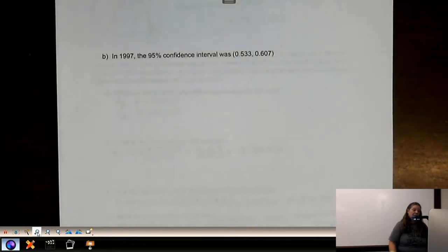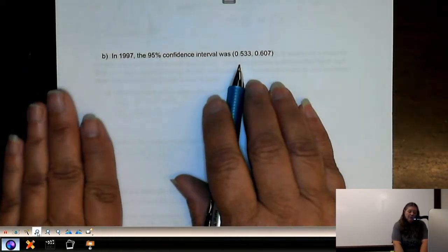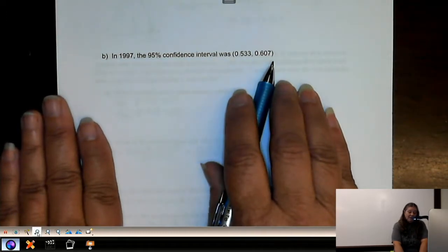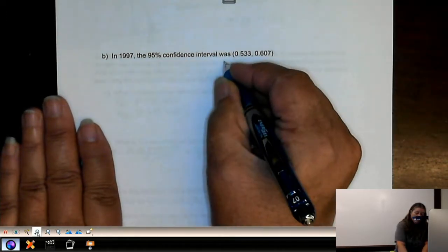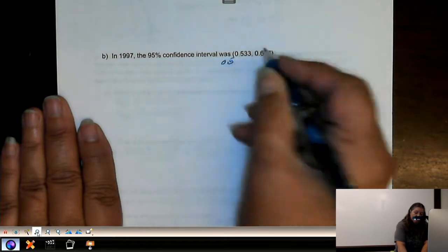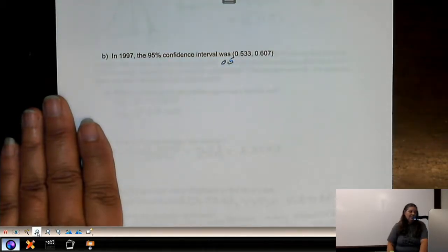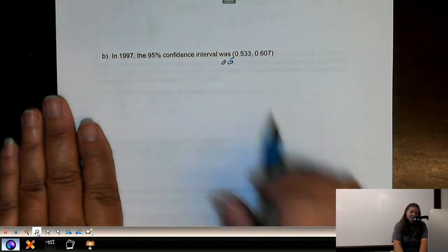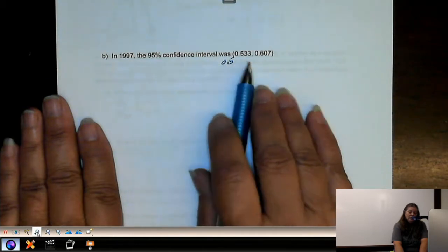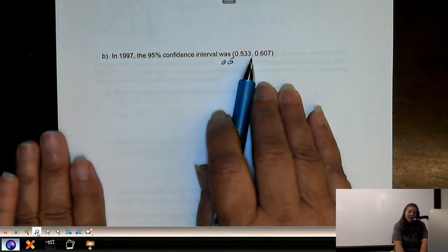Now, if we look at the one done in 1997, we have 0.533 to 0.607. And if we look, 0.5 is out here someplace, to the left of the confidence interval. So 0.5 is not within the confidence interval,